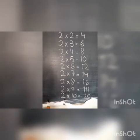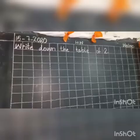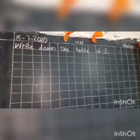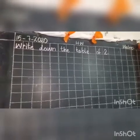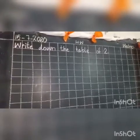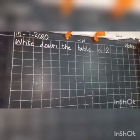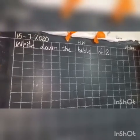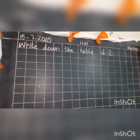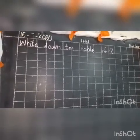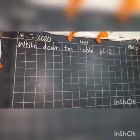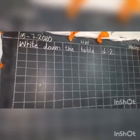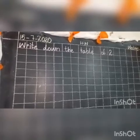Okay students, take out your notebook and copy. First of all, write down the date on the top of the page — 7, 20, 20, and Wednesday. Then write down the question: write down the table of 2.